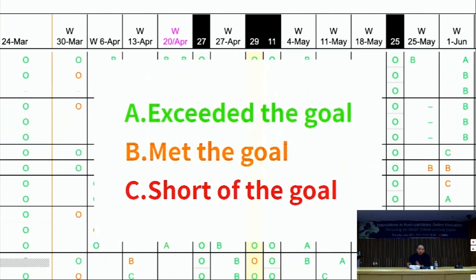These diligence points actually constitute 40% of the student's final grade, which is quite significant. If a student got B's throughout the semester, they will get the full 40 points. C's reduce total points, but A's earn more points. This way, we made it so that students can make up for their shortcomings later and don't lose their motivation.